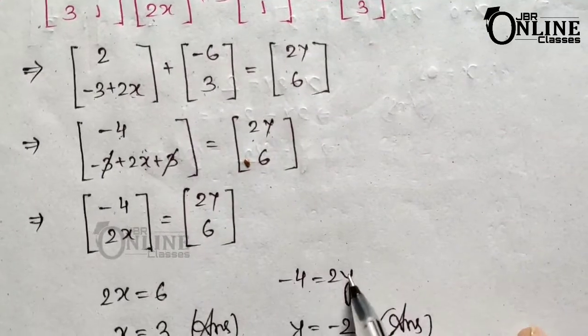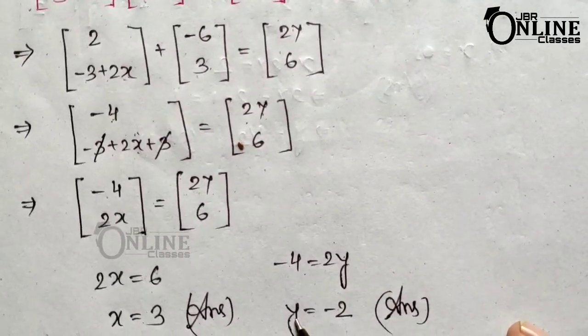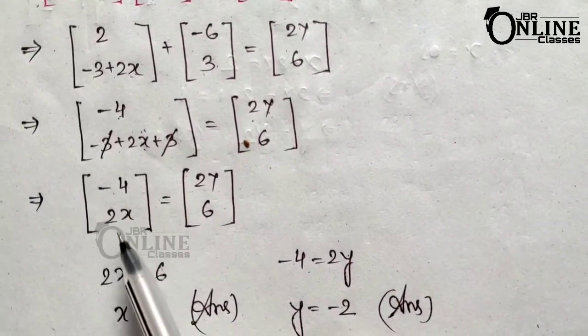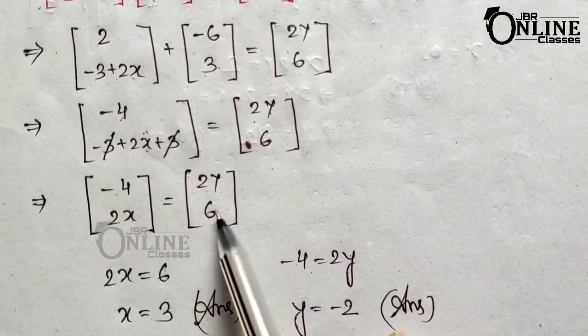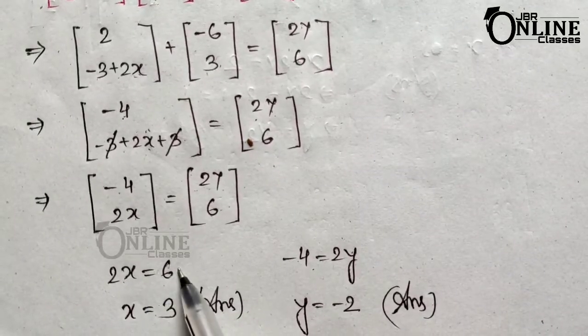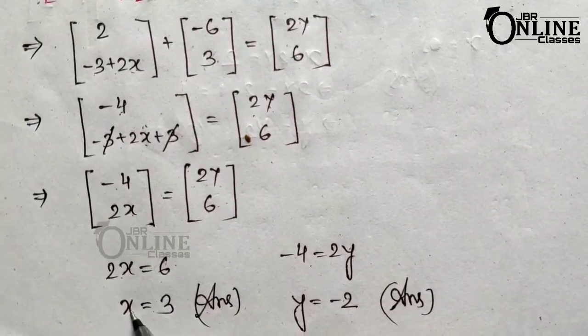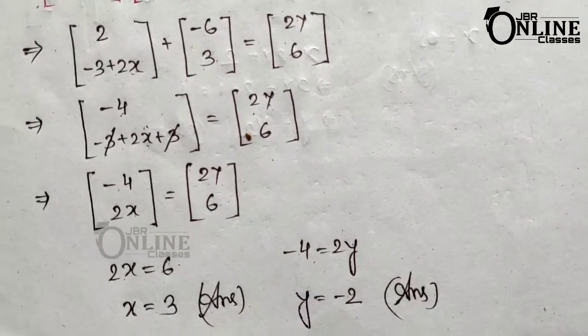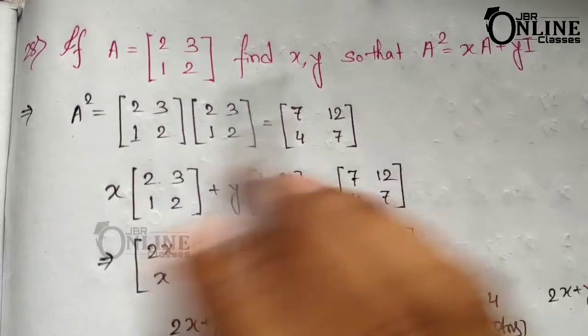By comparing elements: minus 4 equals 2y, so y equals minus 2. And 2x equals 6, so x equals 3.